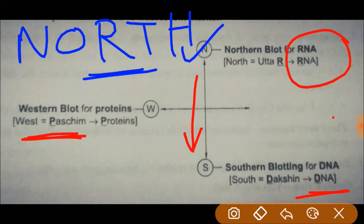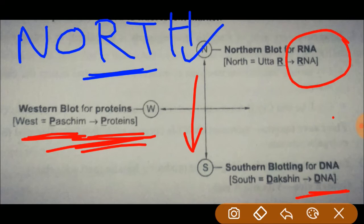Now, which element is left? I told you only three elements are used in blotting techniques. So only western blotting is left, and protein is the only element left. So western blotting is related with proteins. This is the simple trick that you can follow to remember different kinds of blotting techniques.